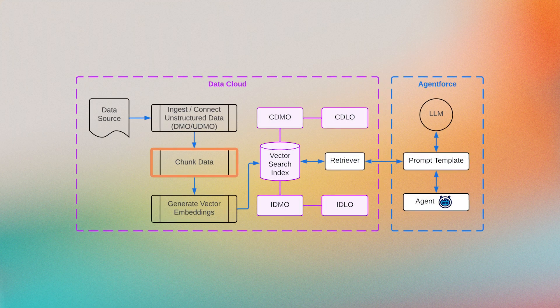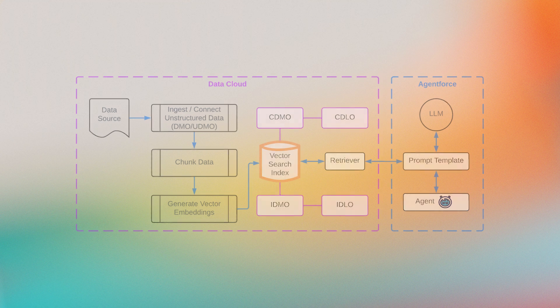To make unstructured data searchable, this data is processed through three key steps: chunking, where the content is segmented into logical units; vectorization, which is the process of converting those chunks into embeddings; and indexing, where the embeddings are stored in a searchable index.